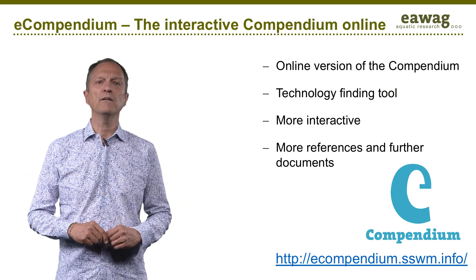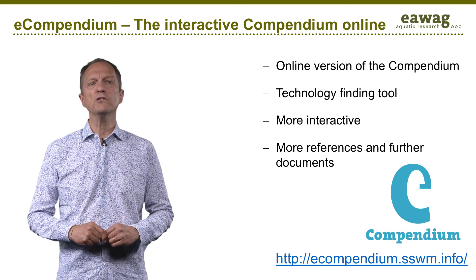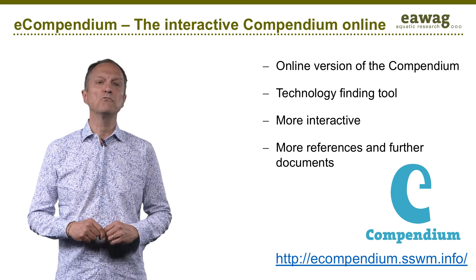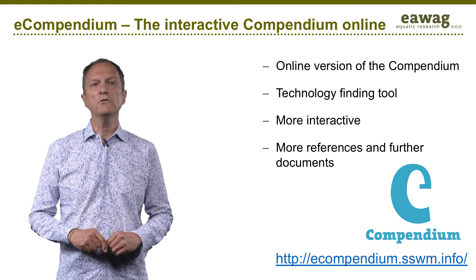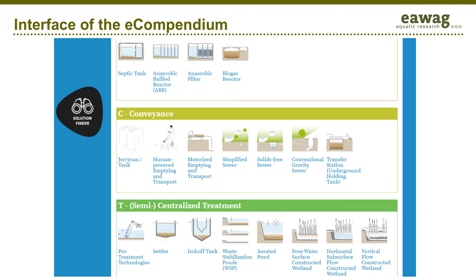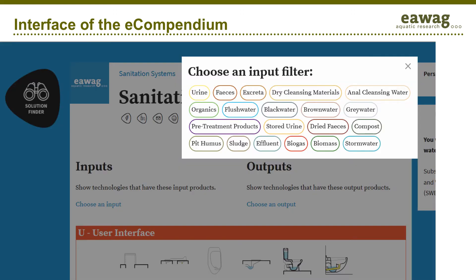The e-compendium, the online interactive version of the tool, helps the user find the most relevant technologies and includes more references and further documentation. In the user-friendly interface, all technologies are listed by their functional group. The user can then apply filters for input and output products to find the applicable technologies from the five functional groups.